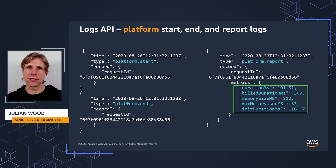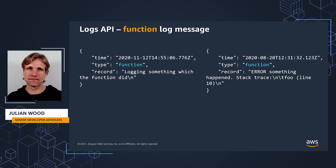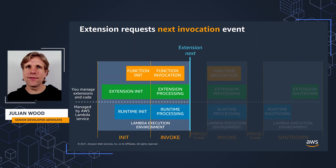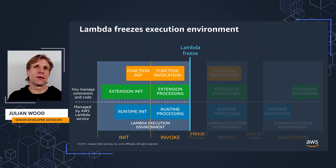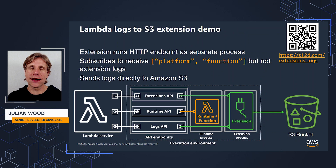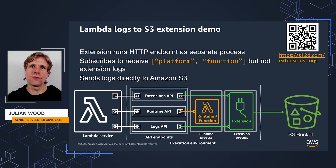Here's an example of two function log messages — the same messages your function usually sends to CloudWatch logs. When the extension is finished processing logs, it uses the extension API to request the next event. As normal, if there are no pending invocations, Lambda freezes the execution environment until it needs it again. I have a demo of a logs extension packaged in a function as a container image. The extension runs a local HTTP endpoint to receive logs directly from Lambda. This subscribes to receive platform and function logs, but not extension logs.